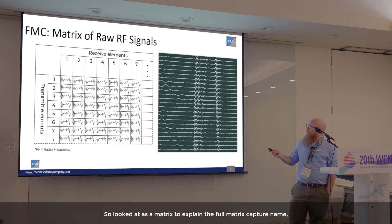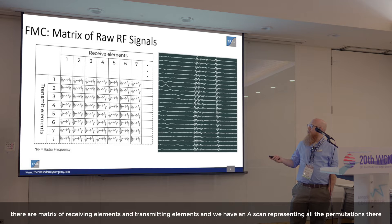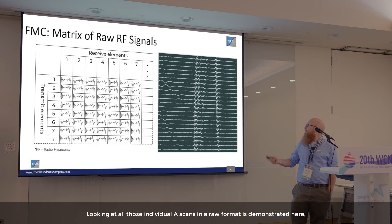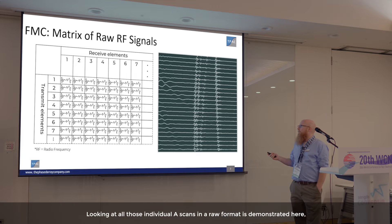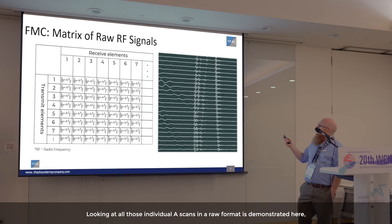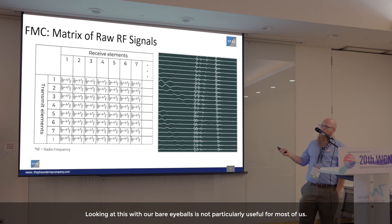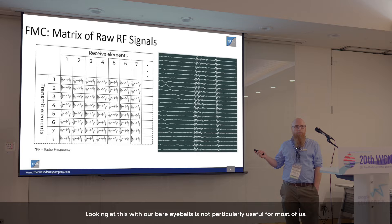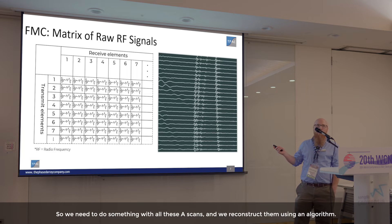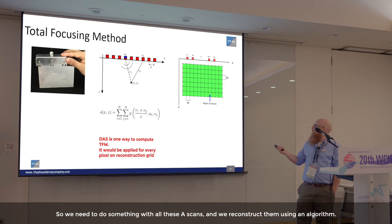Looking at this as a matrix explains the full matrix capture name: there is a matrix of receiving and transmitting elements, with an A-scan representing all permutations thereof. Looking at all those individual A-scans in raw format shows echoes from inside the material, but looking at this with our bare eyes is not particularly useful. We need to do something with all these A-scans and reconstruct them using an algorithm.